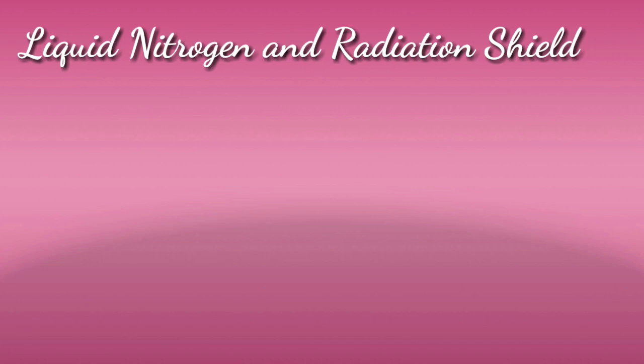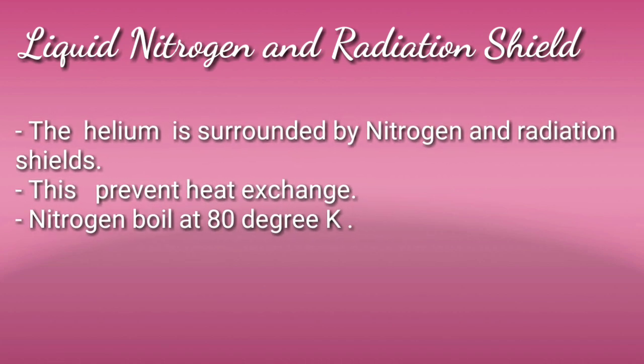Next one is liquid nitrogen and radiation shield. Helium ko surround karne ke liye nitrogen aur radiation shield hoti hai jo heat exchange ko rokti hai, because some minute leakage can happen. To protect from this leakage, we provide liquid nitrogen and radiation shield. This prevents heat exchange between helium and the surroundings. Nitrogen is very cheap; its boiling point is 80 Kelvin. Both together reduce the helium leakage to around 0.3 liters per hour.